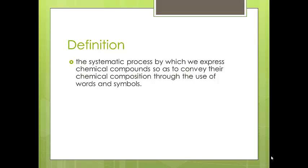The definition of nomenclature is the systematic process by which we express chemical compounds so as to convey their chemical composition through the use of words and symbols. That's about as confusing as you can get. There are lots of big words in there. So what does it mean? Well, at the heart of it, names of chemicals tell you what is in a compound and how much of it there is.